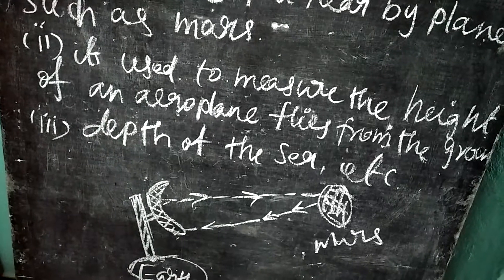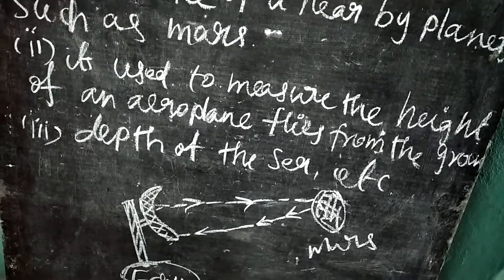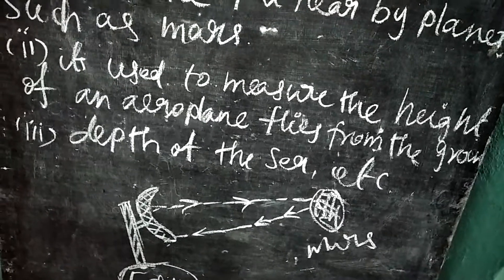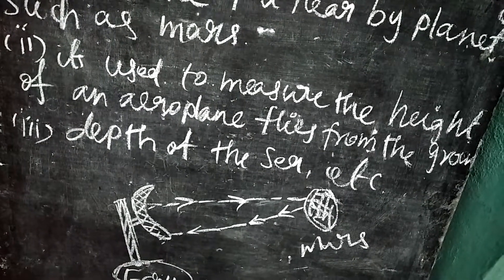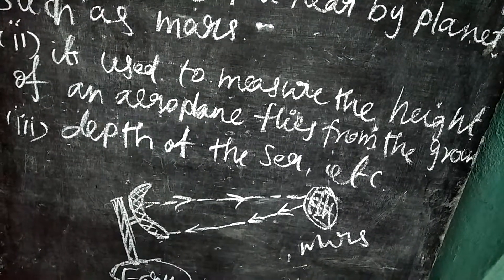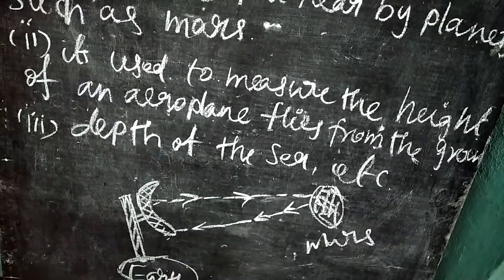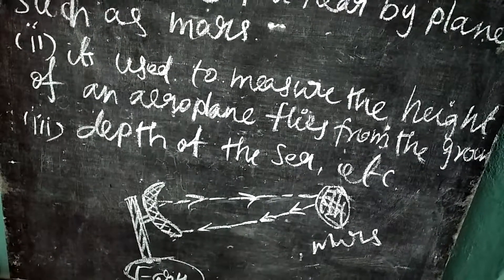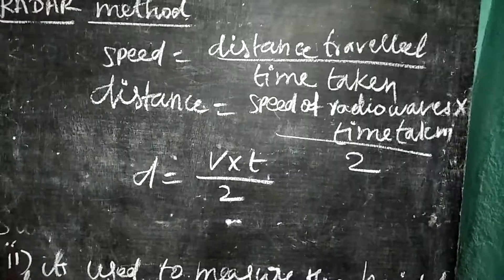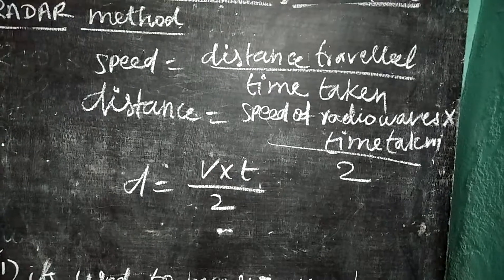The antenna on the surface of the Earth transmits radio waves. The radio waves travel to Mars and reflect back. After reflecting from the Mars planet, the antenna on the surface of the Earth receives the radio waves.